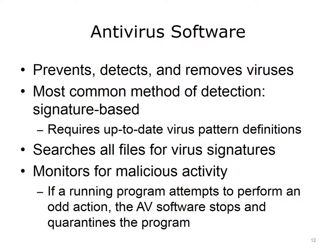Requiring all devices to have antivirus software installed is yet another way to mitigate security threats. Antivirus, or AV software, prevents, detects, and removes viruses. Several methods of detection are used to identify viruses. The most common method, signature-based detection, identifies viruses by comparing the contents of a file to the database of known virus signatures. Therefore, AV software requires up-to-date virus pattern definitions. As new viruses and new attacks become known, the AV software vendor updates the ability of AV software to catch and quarantine malicious actions.